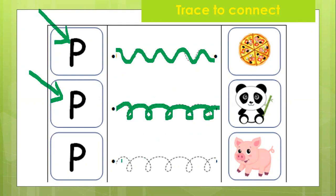One more P. P is for pig. It's a pink pig, right? So connect by tracing. Okay, P is for pig.